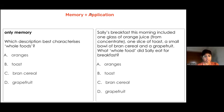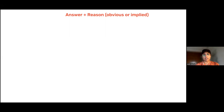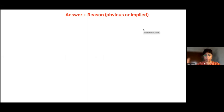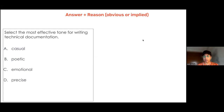Another way is where the child is required to answer along with a reason. The reason could be obvious — stated in the stem or distractor — or the child will have to think of it implicitly and then choose the answer. For example: 'Select the most effective tone for writing technical documentation' is a straightforward question. Whereas 'Select the sentence that best demonstrates how to start a technical document' requires a little bit more reasoning.